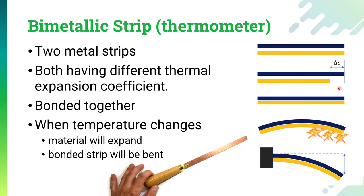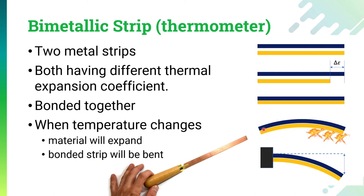We bind the two strips together by means of welding or soldering. Once bound, when heated they cannot expand independently — they must expand together. The material with the higher expansion coefficient will try to expand more, and due to that tendency, the whole strip will get bent. So the change in temperature is converted into a change in the radius of curvature of the metal strip. If we fix the first end — creating a cantilever beam situation — the free end will deflect up or down, allowing us to measure that displacement to measure temperature.